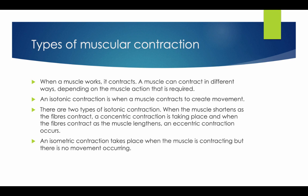Types of muscle contraction. When a muscle works, it contracts, and a muscle can contract in different ways depending on the muscle action that is required. An isotonic contraction is when a muscle contracts to create movement. There are two types: when the muscle shortens and the fibres contract, a concentric contraction is taking place; and when the fibres contract as the muscle lengthens, an eccentric contraction is occurring.